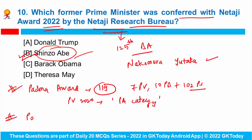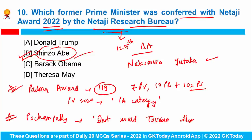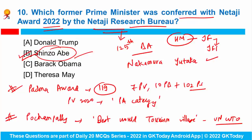A village in Telangana named Pochampalli has been tagged as the best world tourism village by the United Nations World Tourism Organization. Actress Hema Malini is the recipient of the Indian Film Personality of the Year Award at the International Film Festival of India 2021. You have to tell me at which place this event was held — please write your answers in the comments.